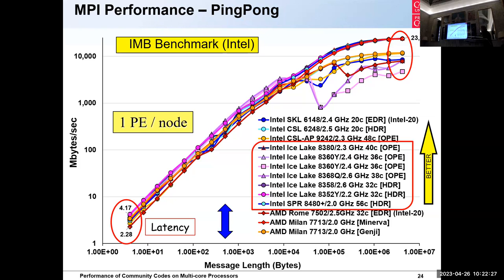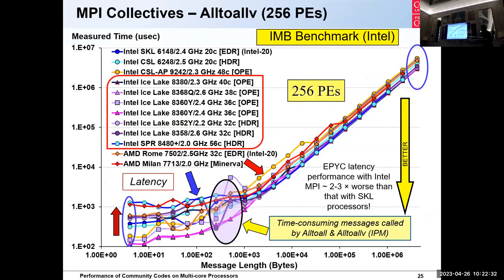The real driver for many codes is collective operations. Materials codes often involve collective communications — exchanging data in reciprocal space. The lower the total time to do that collective, the better. The biggest problem is at typical message lengths involved in many materials codes, where there's a large variation. If the end application — in this case CASTEP — spends a lot of its time doing MPI_Alltoallv, which it does, then this is a problem and you better get your processor right.